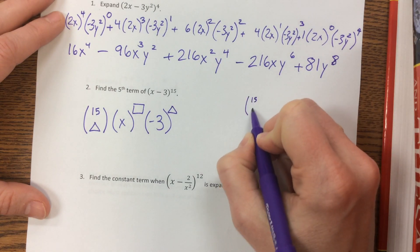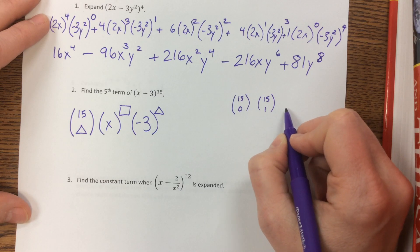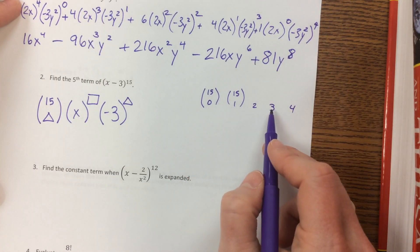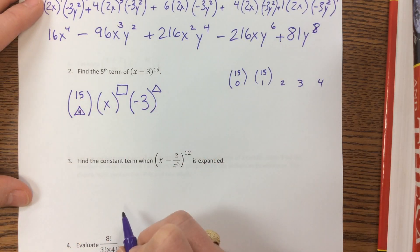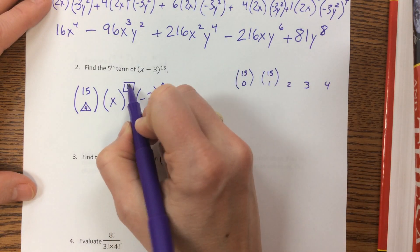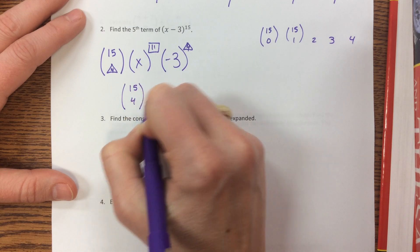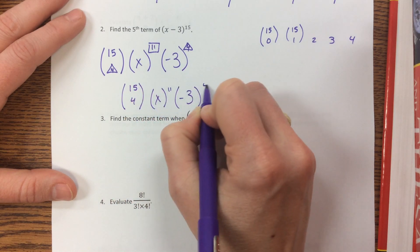So if we want the 5th term, if you remember the very first one, it would be 15 choose 0, then it's 15 choose 1, then 2, 3, then 4, so this is the 1st, 2nd, 3rd, 4th, 5th term. The 5th term is 15 choose 4. And so then this right here becomes a 4 and this one becomes 11. That's a little hard to see. So what I'm going to do is I'm going to say 15 choose 4 times x to the 11th times negative 3 to the 4th.